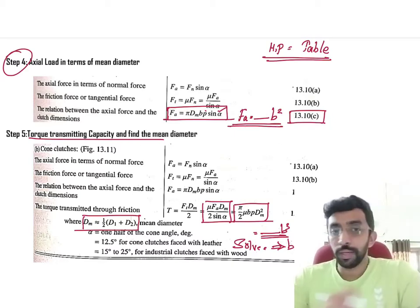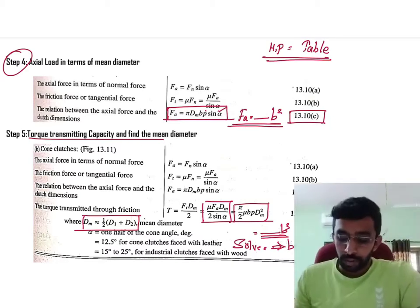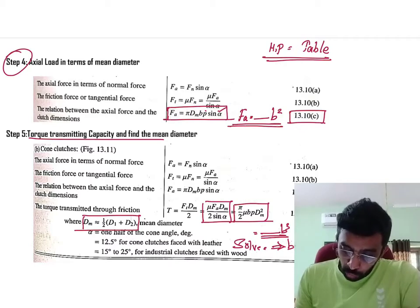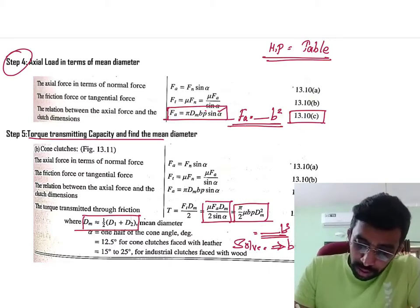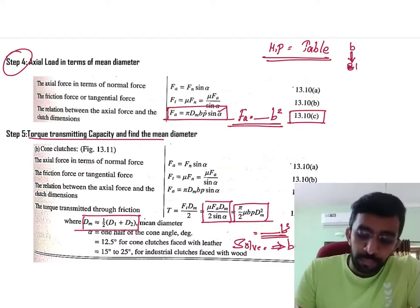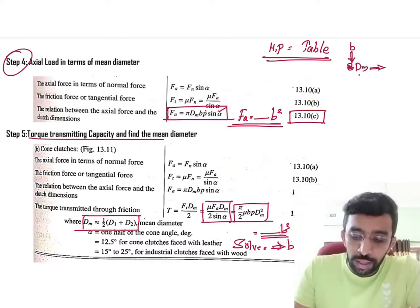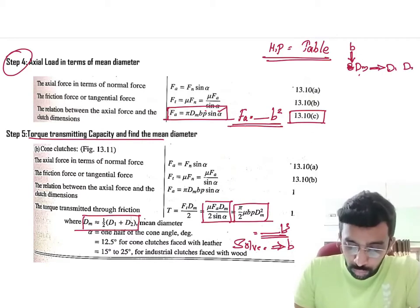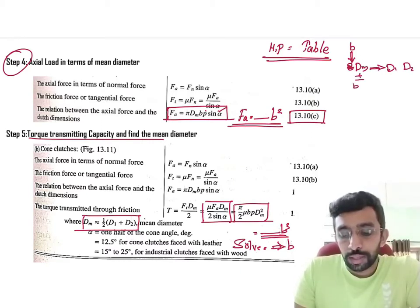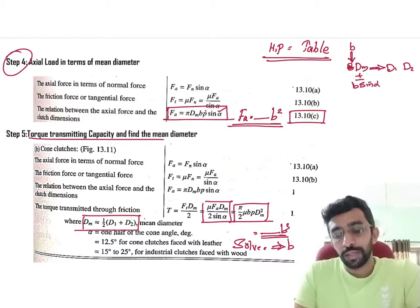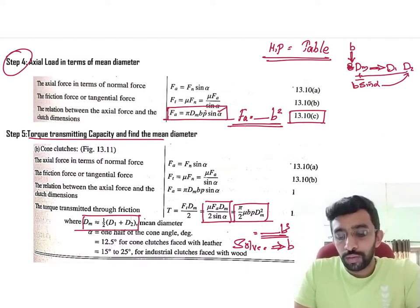d1 means d_inner, d2 means d_outer. Once you get the value of b, immediately after getting the value of b, you find the value of dm, then you find the value of d1 and d2 using dm ± b sin α. So, dm + b sin α will give you the value of d_outer, minus is going to give you the value of d_inner. That is clear, I think.